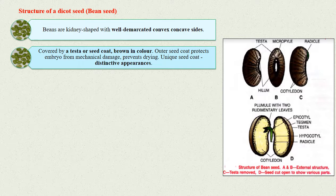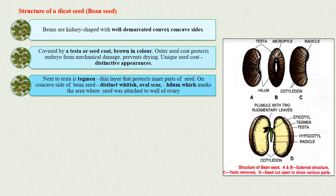Lying next to the testa is the tegmen. It is a thin layer that also protects the inner parts of the seeds.